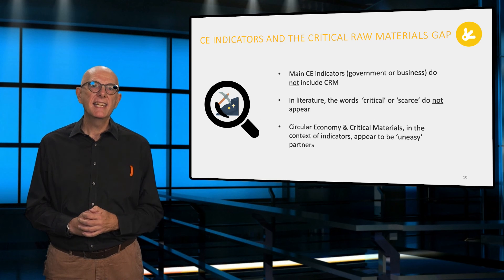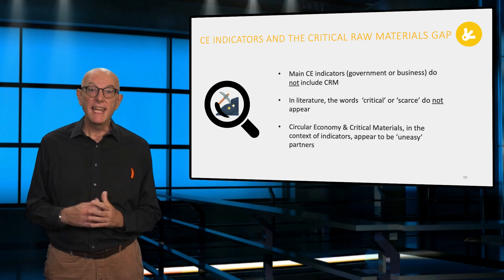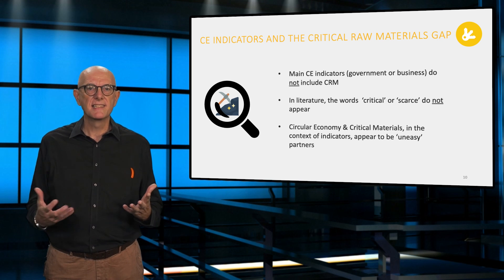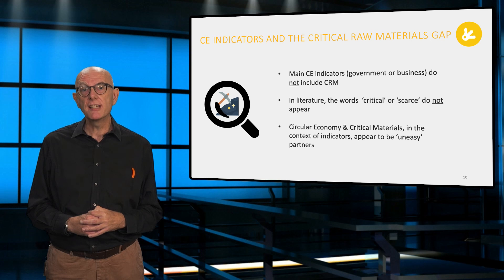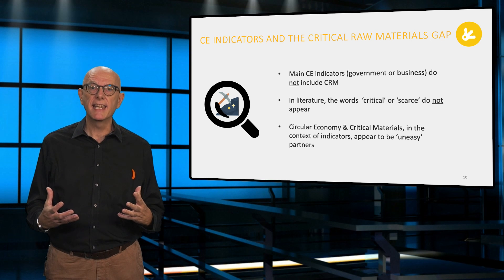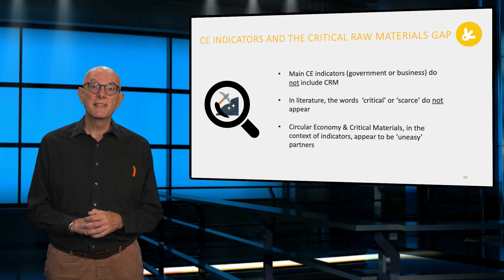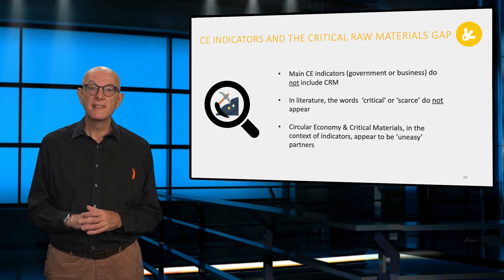The main circular economy indicators, be they from governments or from business, do not include critical materials in their measures. In turn, publications on circular indicators do not feature the words critical or scarce, a reflection of the actions of governments and businesses themselves. In conclusion, it appears that the circular economy and critical materials, in the context of indicators, appear to be uneasy partners. Given the earlier statement that indicators determine where effort is focused and where money gets spent, we have more work to do on circular indicators and critical materials.